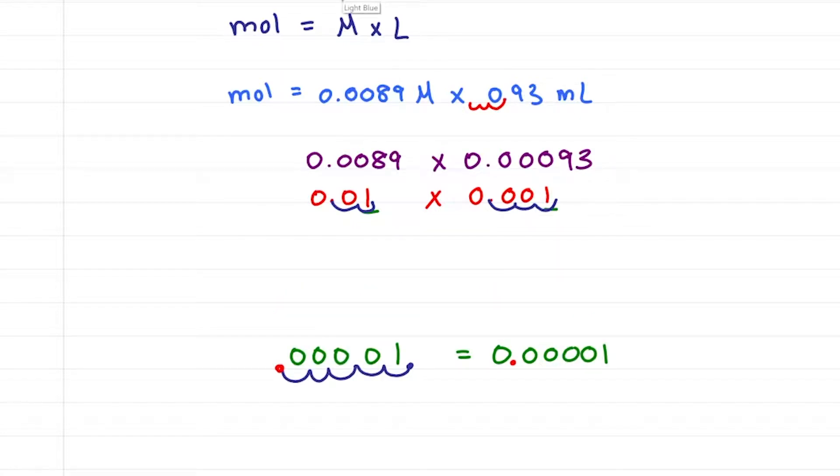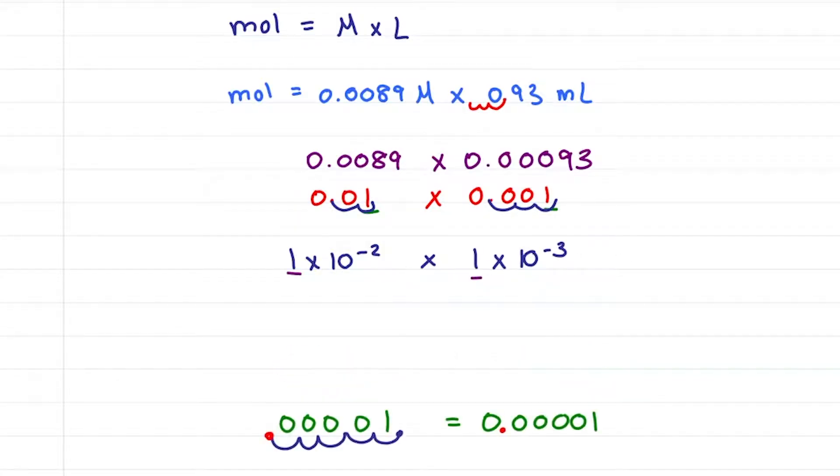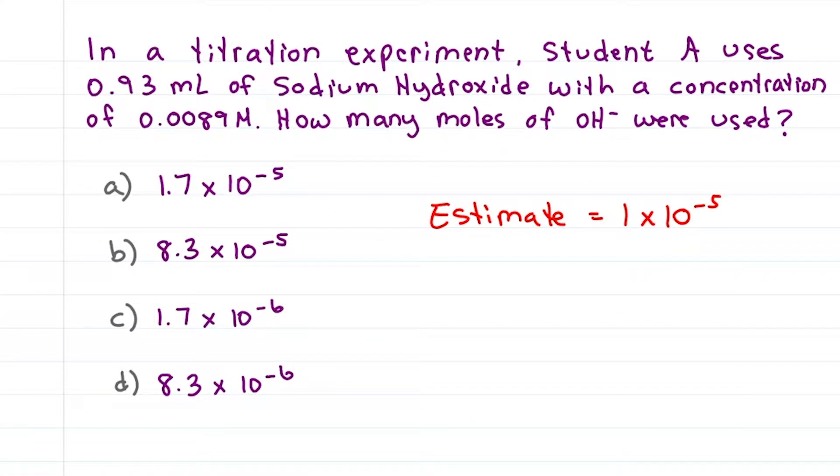Another option is to recognize that I have one times ten to the minus two times one times ten to the minus three, and in this case, I have one times one gives me one. Ten to the minus two times ten to the minus three, you simply add your exponents, giving me one times ten to the minus five. We have our estimate, but it looks nothing like our answer choices.